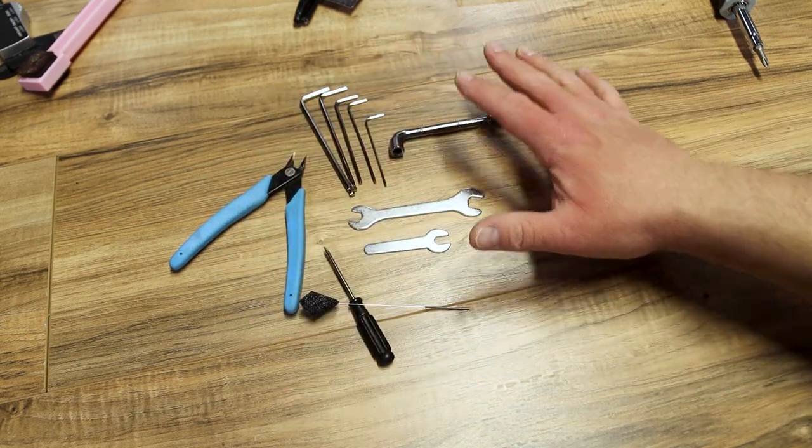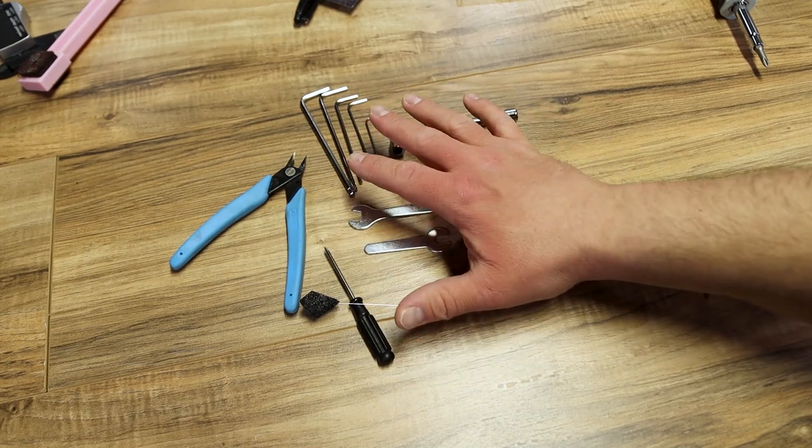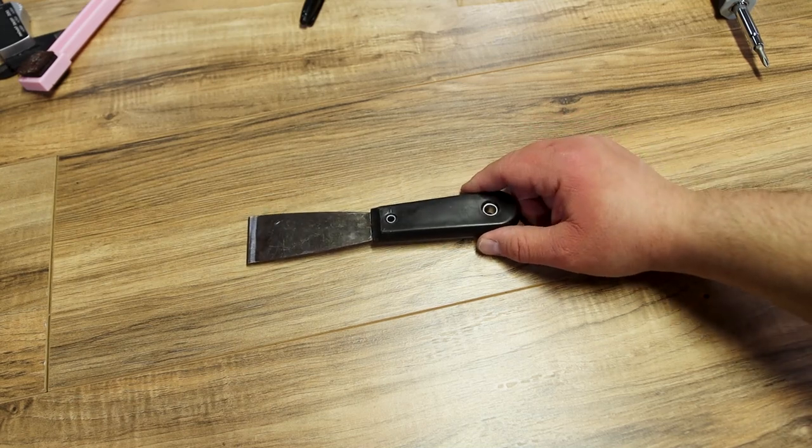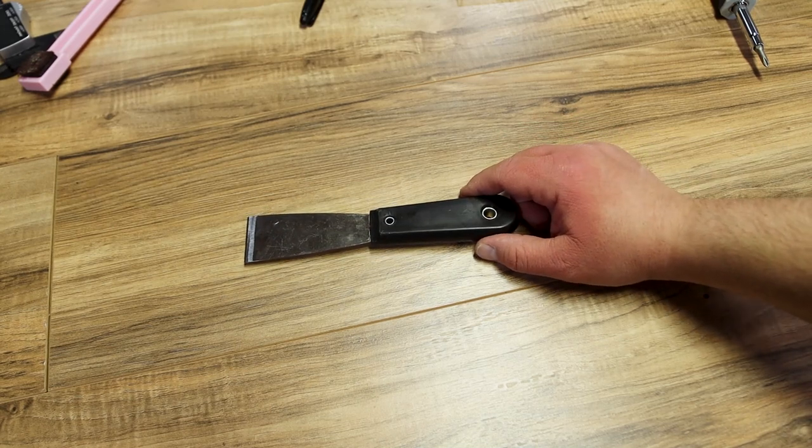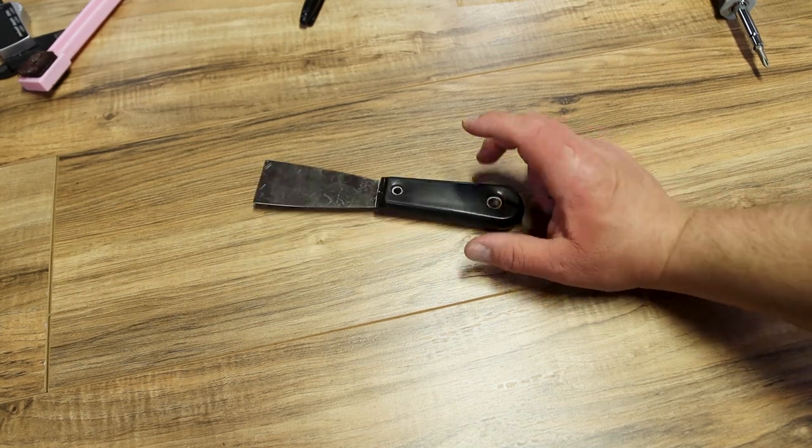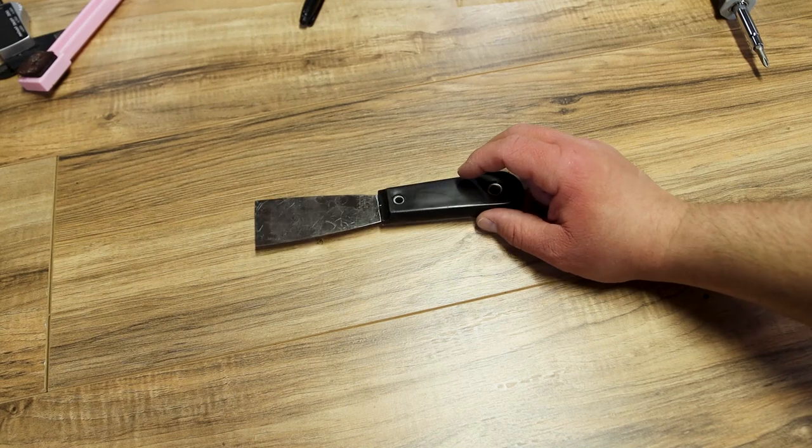Now that we've seen some things that come with most of the printers let's jump into some other things that I suggest you have. Now I almost forgot the spatula. Now this comes with virtually every printer that I have. There's only one that I have seen that didn't come with this. This is a spatula. You're definitely gonna need this to help get stuff off the bed.